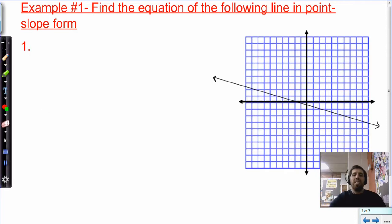We have to find the equation of the following line in point-slope form. So what do we like to do here? First we have to name two points we see on this line. And again, we're looking for specific points that this line goes directly through.